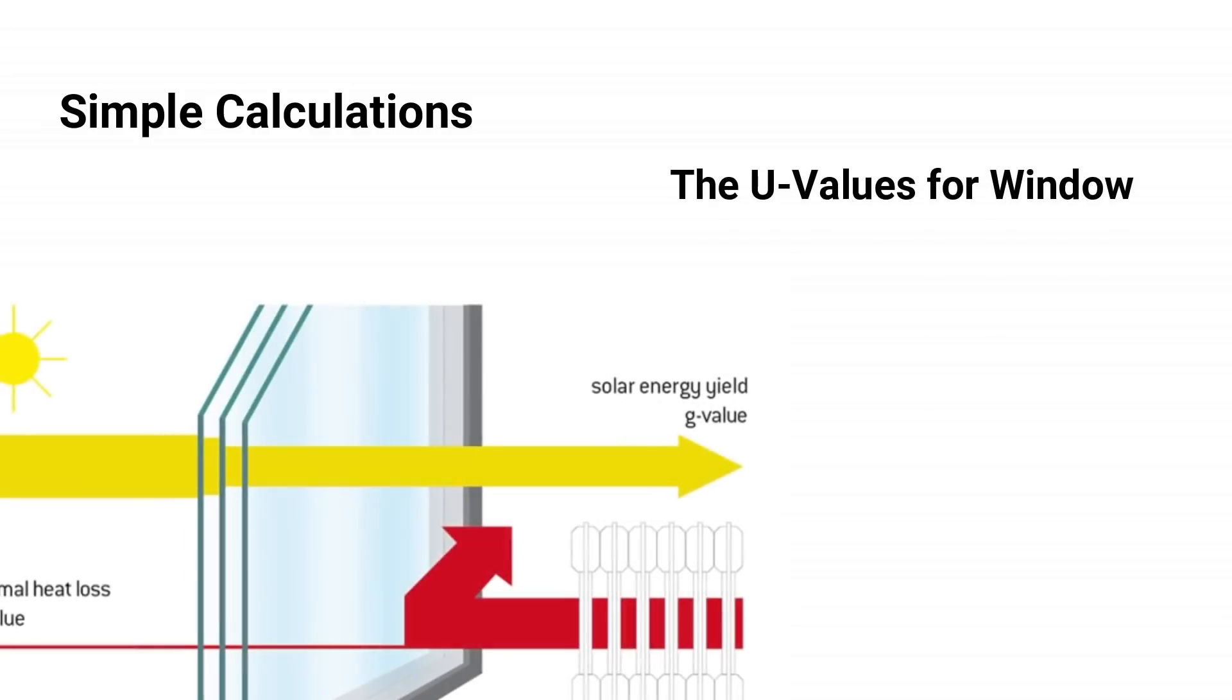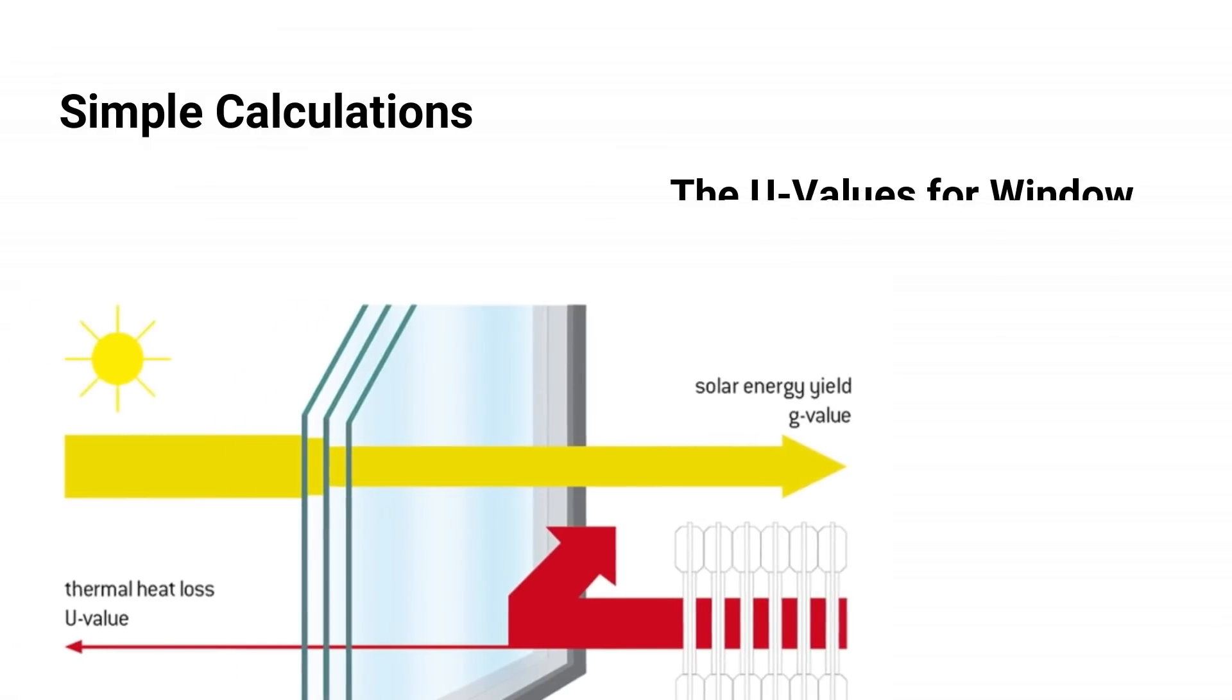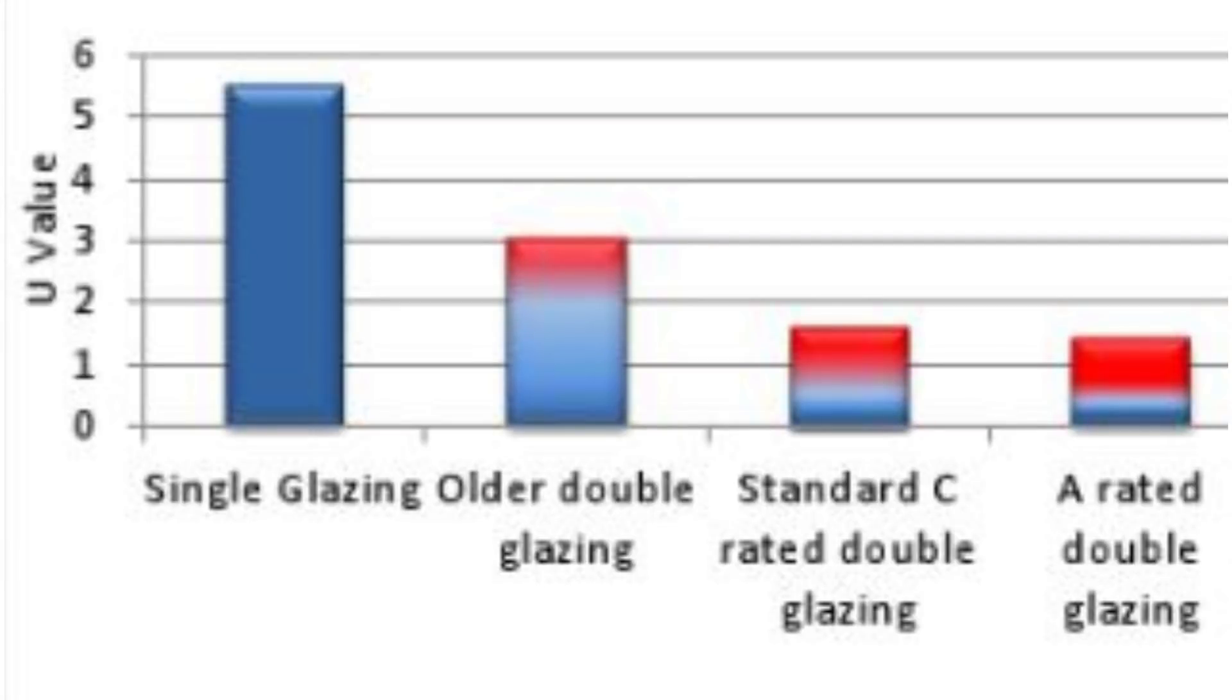The performance of a window is often expressed in the form of a U-value, which is the overall heat transfer coefficient. In short, the higher the U-value, the more heat you are going to lose.